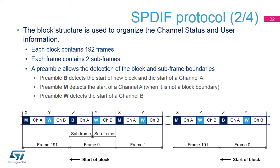In the IEC 60958 specifications, the block structure is used to decode the channel status, or CS, and user information, or U. Each block contains 192 frames. Each frame contains two subframes. The SAI automatically generates the B, M, and W preambles. Preamble B detects the start of a new block and the start of a channel A. Preamble M detects the start of a channel A when it is not a block boundary. And preamble W detects the start of a channel B.